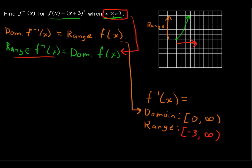Why did they indicate that x is greater than or equal to negative 3? Why did they cut this off? They cut this off because they wanted us to know that this function was one-to-one. The horizontal line test says yes, this is one-to-one, so this does have an inverse.